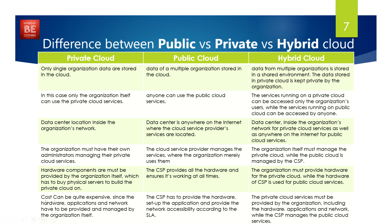And last, cost for private cloud can be quite expensive since the hardware, applications, and network have to be provided and managed by the organization itself. In the case of public cloud, the CSP provides the hardware, sets up the application, and provides network accessibility according to the SLA — service level agreement. In the case of hybrid cloud, the private cloud services must be provided by the organization including hardware, applications, and network, while the CSP manages the public cloud services.